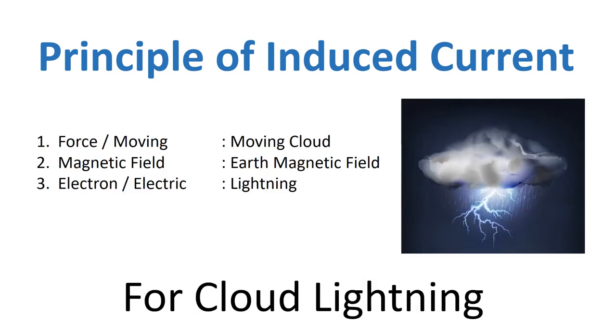We give an example in real life, and this example is cloud lightning. The cloud will move in the atmosphere, and during the raining time the cloud has lightning. The electrons contained in the cloud actually come from the principle of induced current. In this case, the cloud is moving and the magnetic field is the earth's magnetic field. Therefore, in certain conditions, cloud can do lightning.